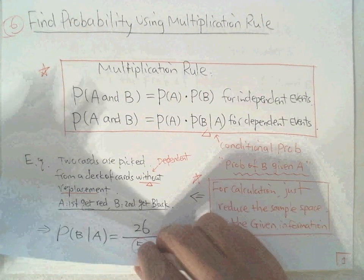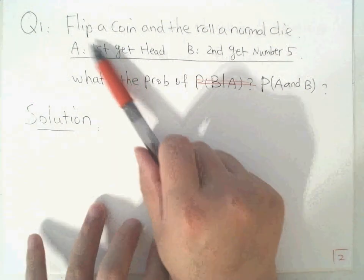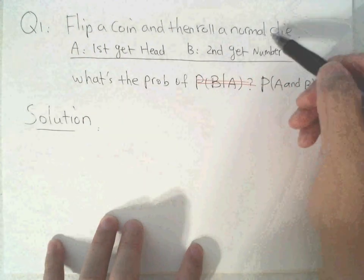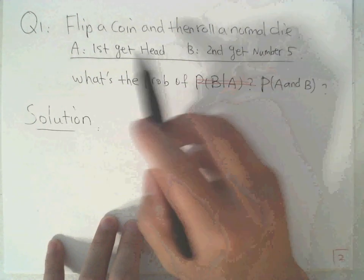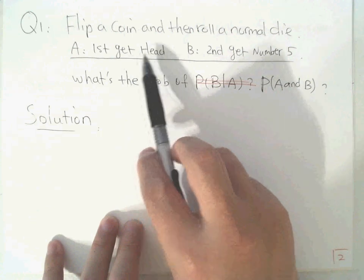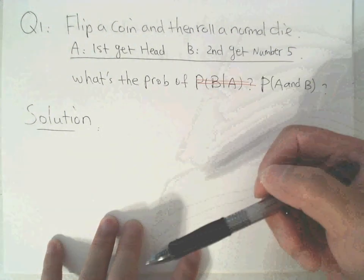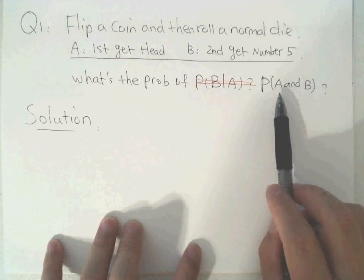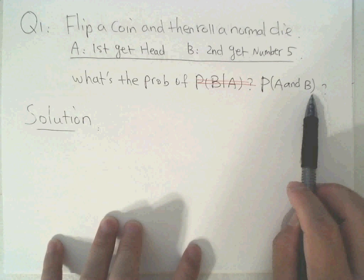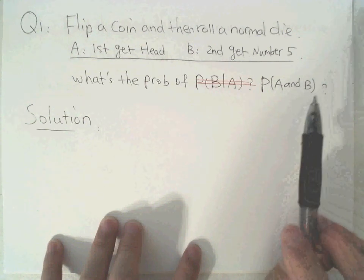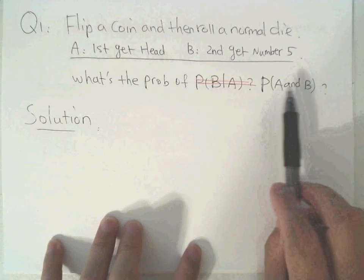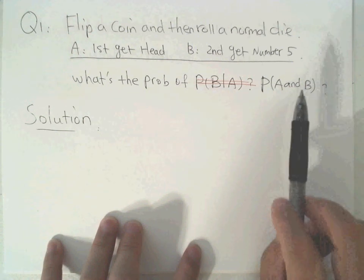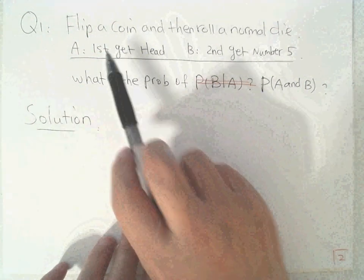Let's look at the first example. Suppose we flip a coin and then roll a normal six-sided die. We want to get heads on the coin flip and then a five on the die. How do we find the probability of A and B? No matter which case, always the first probability times the second. However, sometimes the second is normal probability, sometimes conditional — it depends whether B is dependent or independent of A.